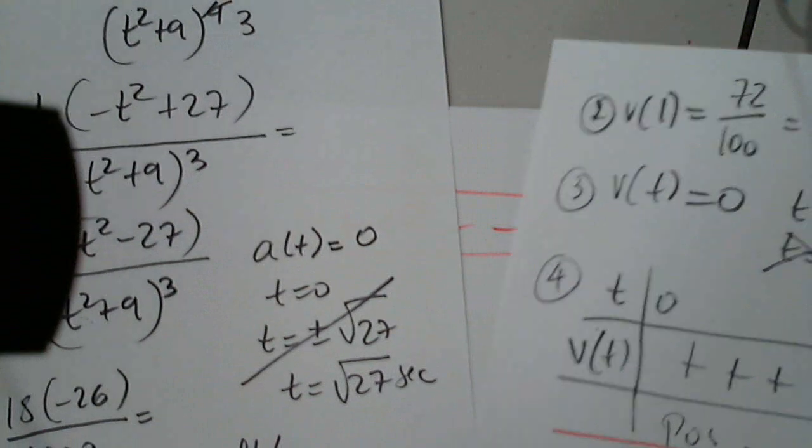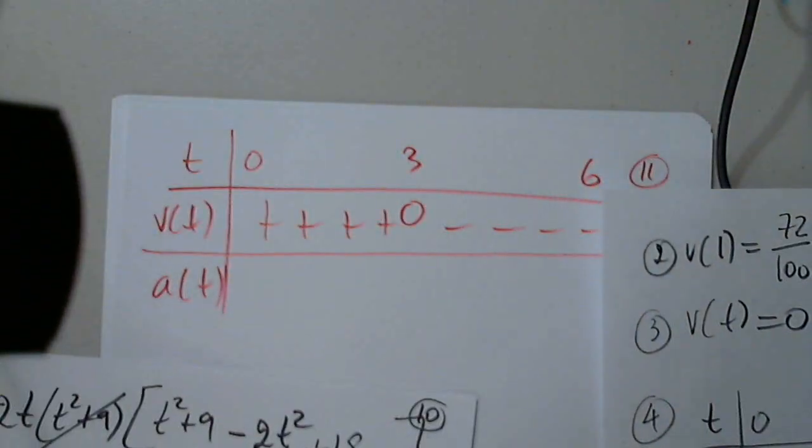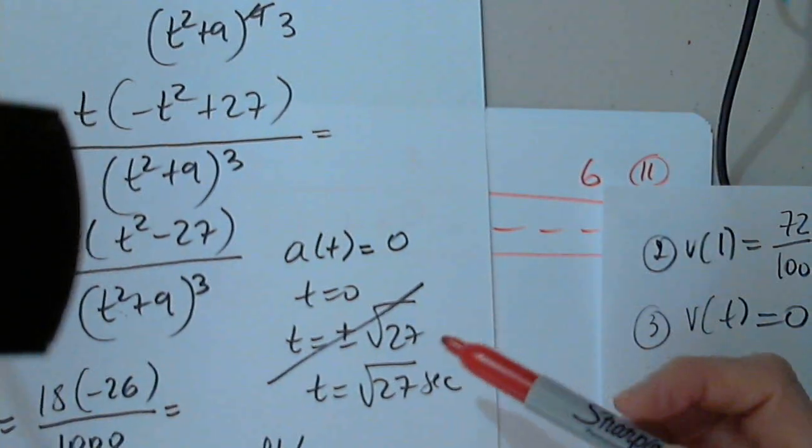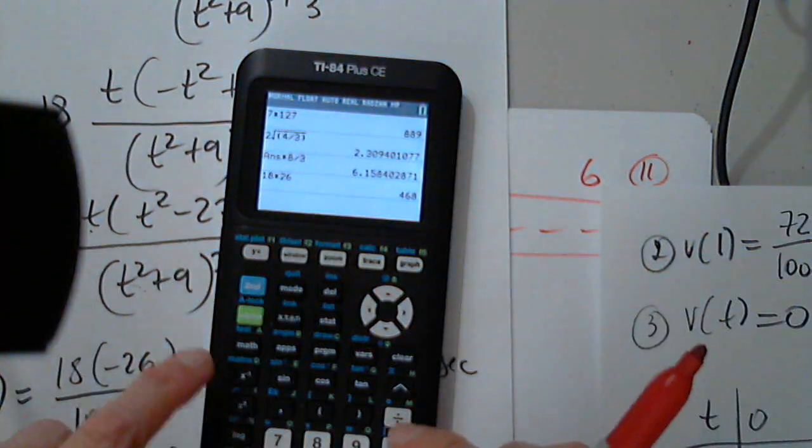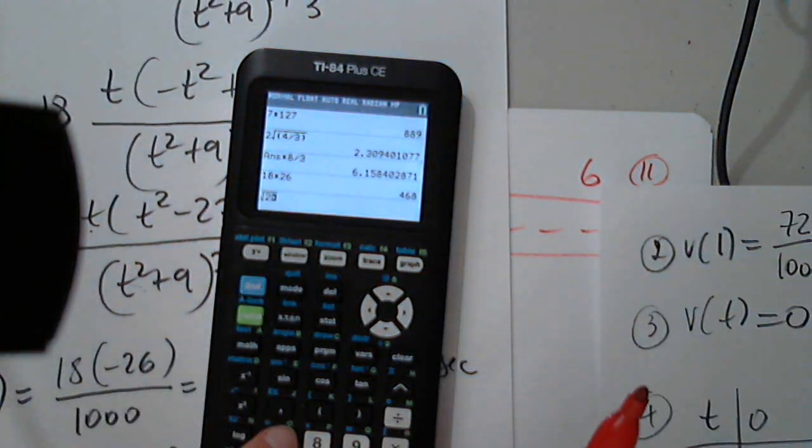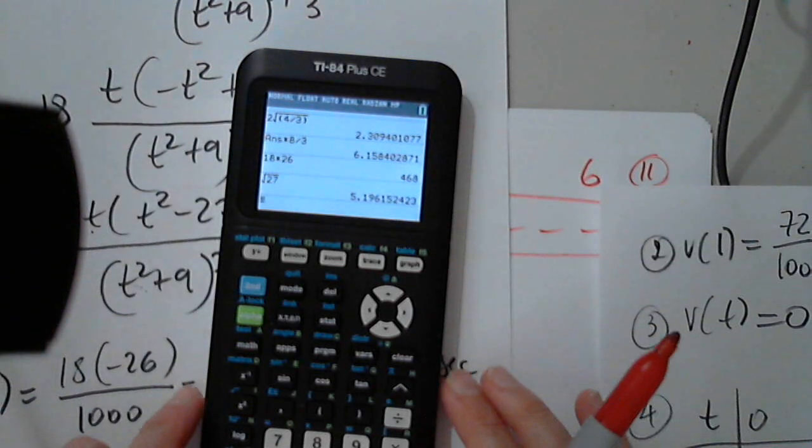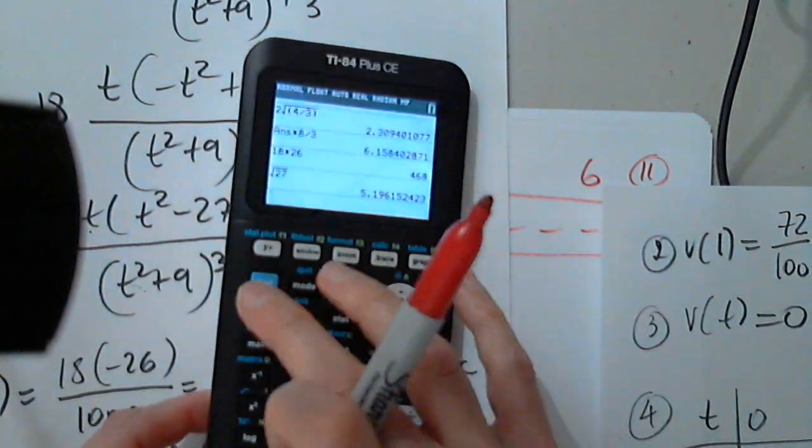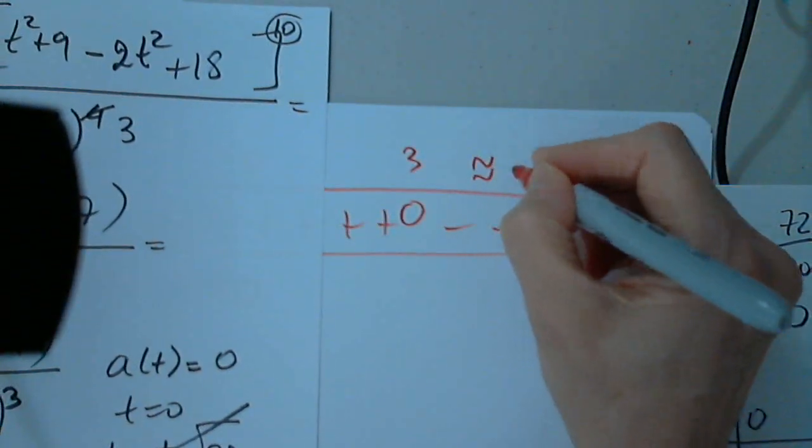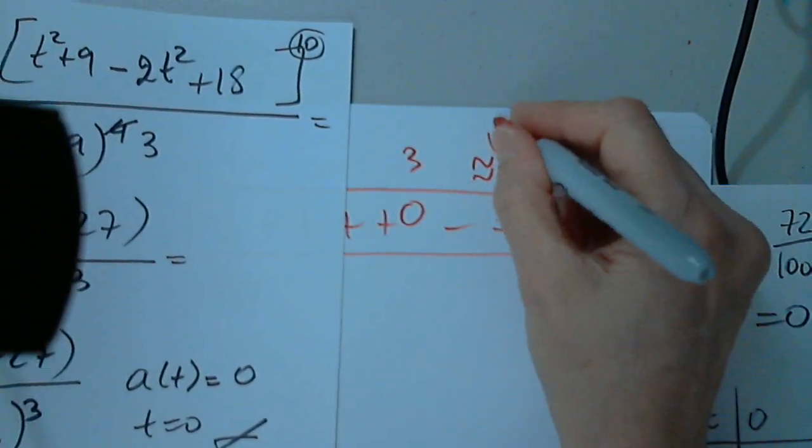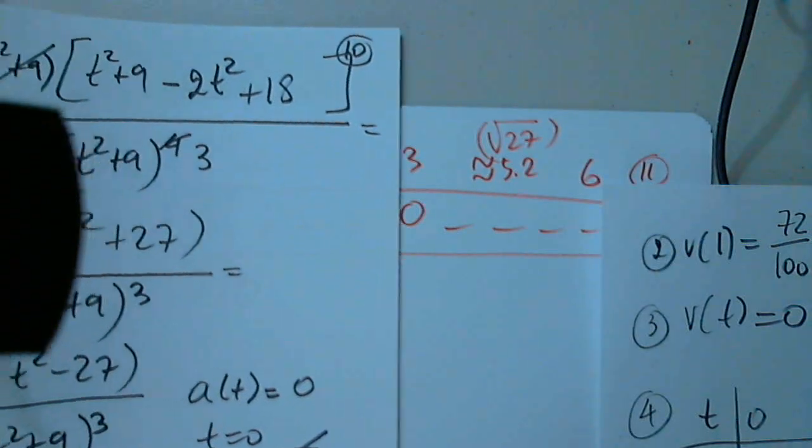And a of t is 0 at 0 and at the square root of 27. So the square root of 27 is 5.2, or the square root of 27 if you want it exact.